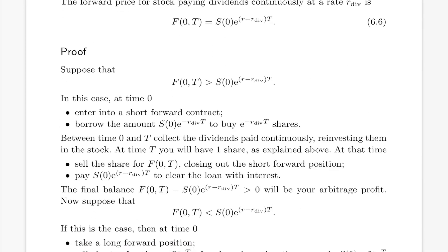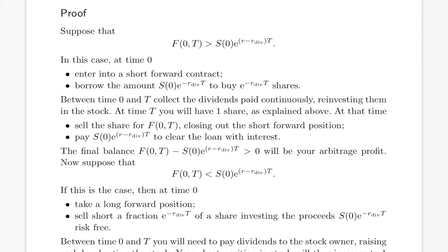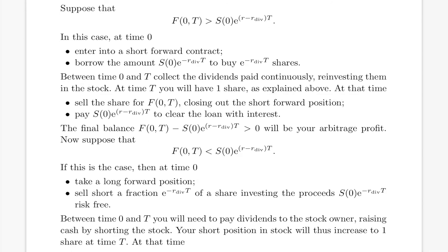Proof of this theorem. Suppose that F(0,T) is greater than S0 · e^((r − r_div) · T). In this case at time zero, enter into a short forward contract. Borrow the amount S0 · e^(−r_div · T) to buy e^(−r_div · T) shares. Between time zero and T, collect the dividends paid continuously and reinvest them in the stock. At time T, you will have one share.